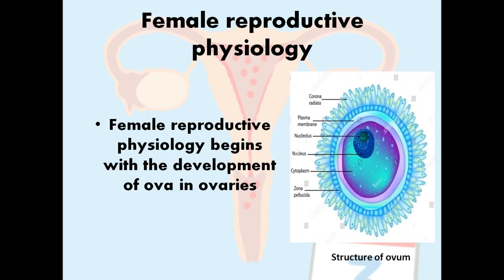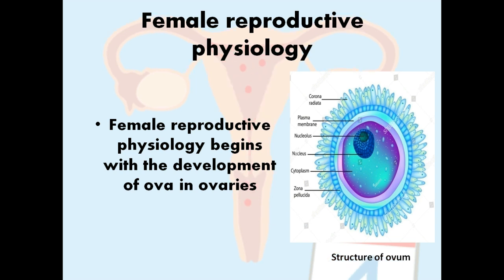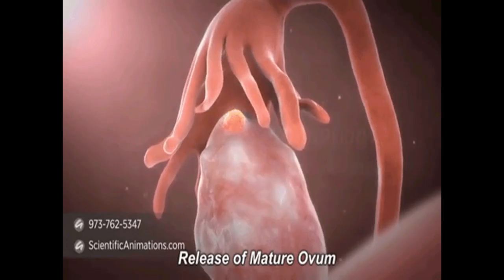Female reproductive physiology starts with the development of ova in the ovaries. If you remember from anatomy, the ovary is the site of production of oocytes. In the diagram on the right, you can see the structure of an ovum. Don't get confused: ova is the plural and ovum refers to one mature oocyte. The ovum has a corona radiata, plasma membrane, nucleolus, and more.